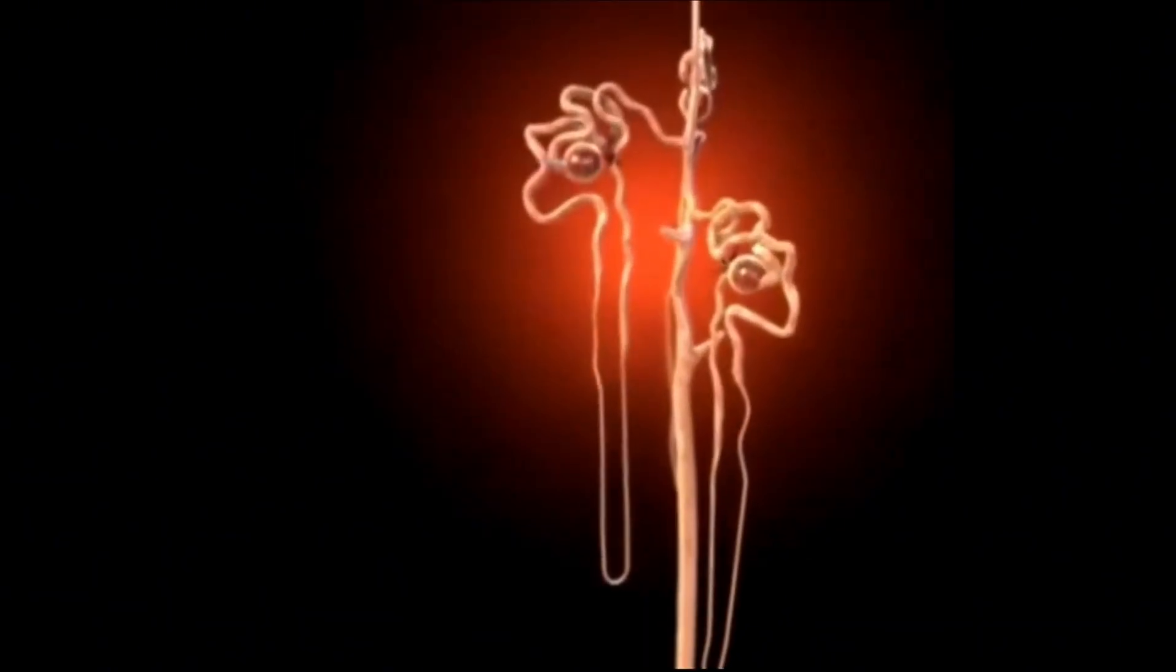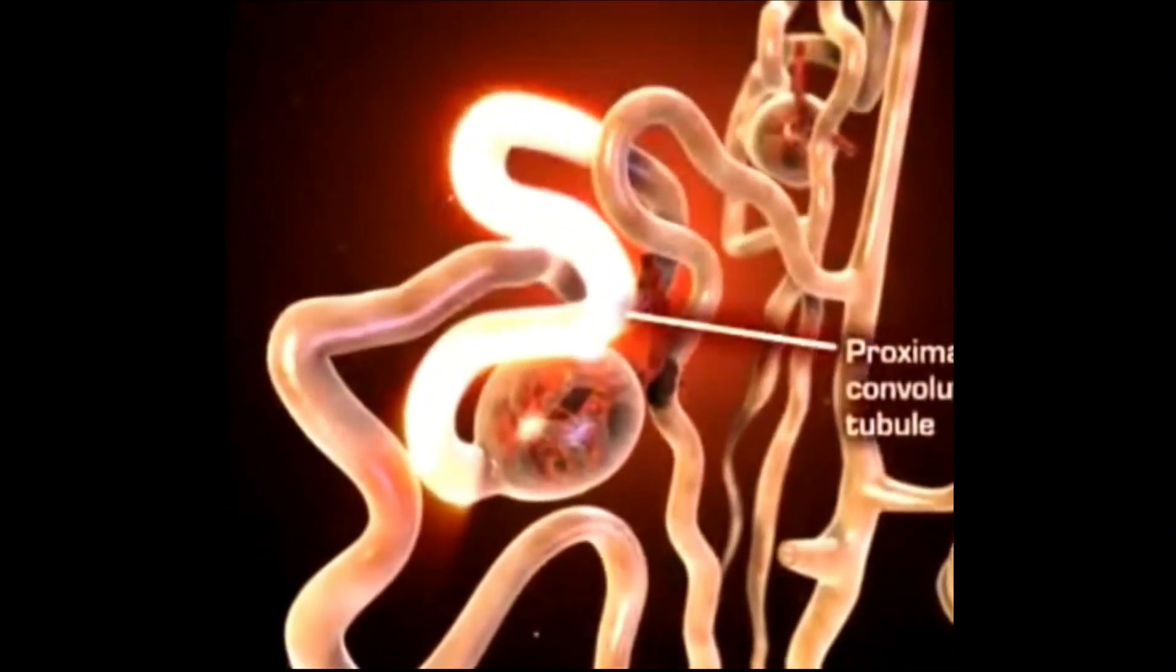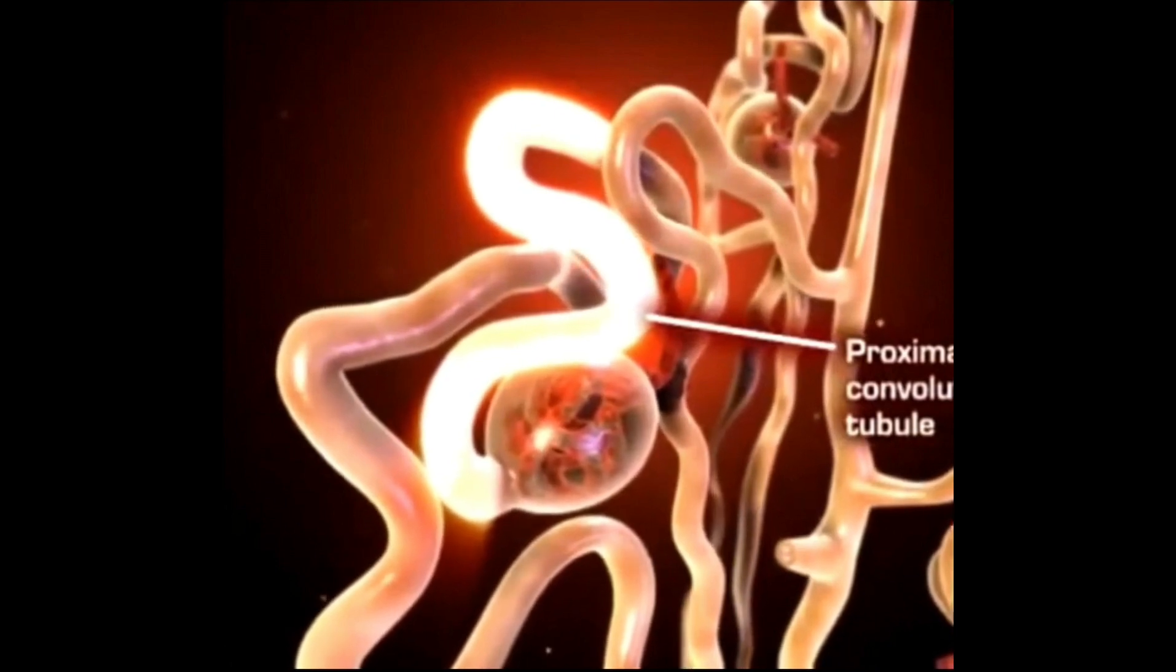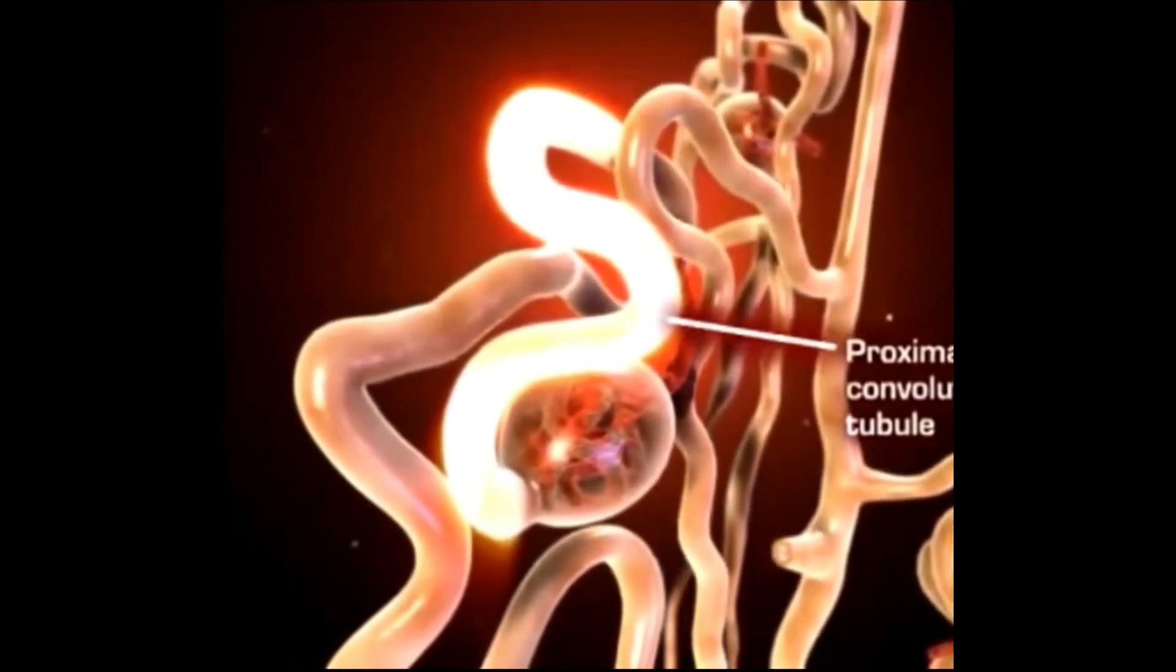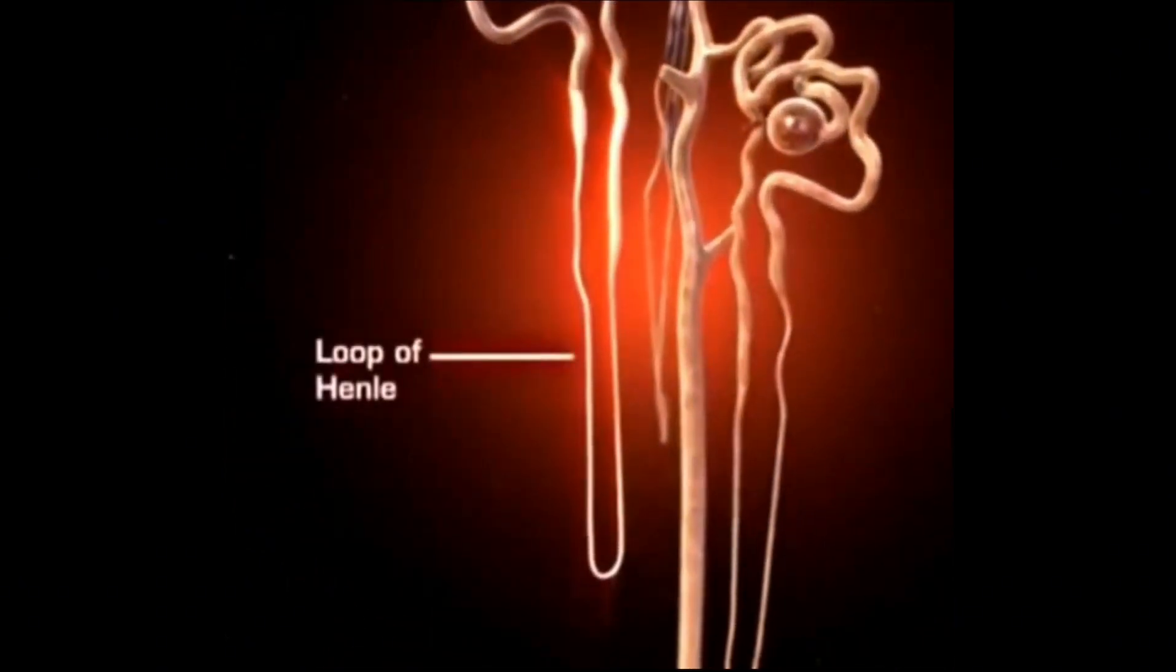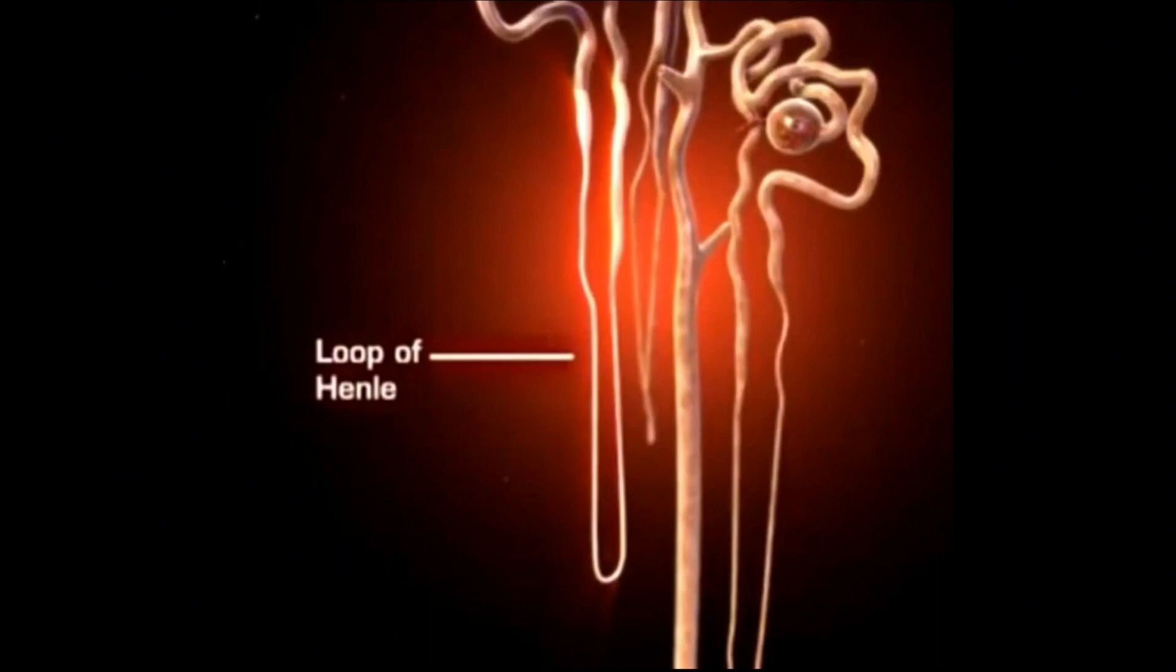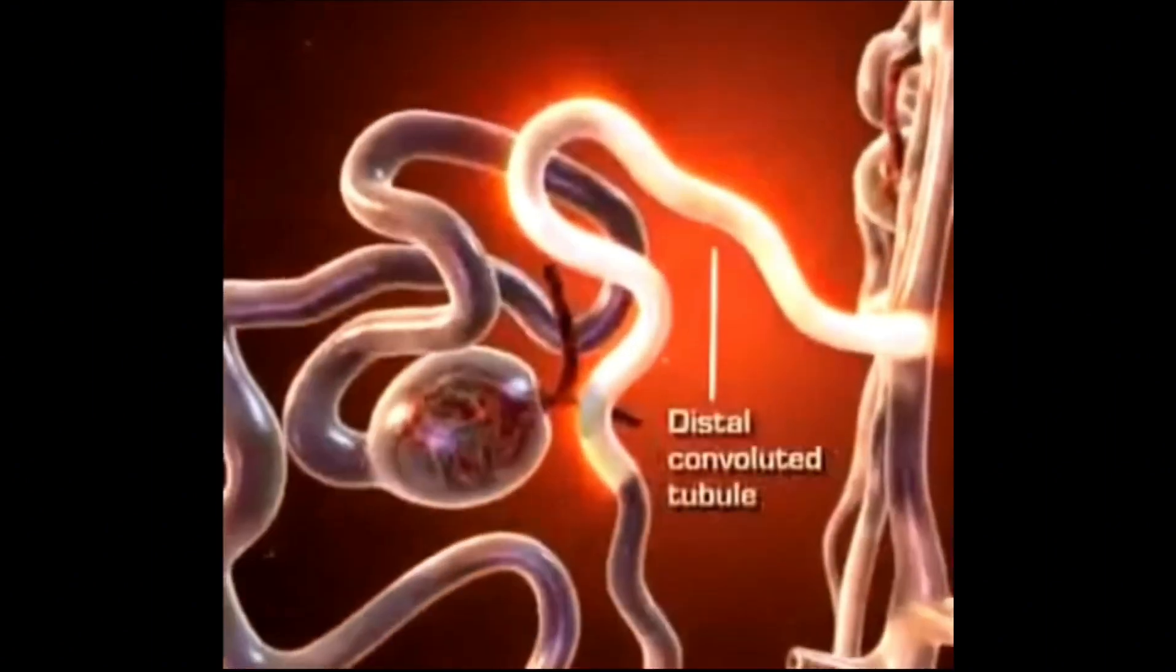Each human kidney contains approximately one million nephrons. These nephrons are responsible for the vital functions of filtering blood, regulating electrolyte balance, and producing urine. It consists of the glomerulus, proximal convoluted tubule, and the loop of Henle, where loop diuretics work. The loop of Henle is a critical component of the nephron, the functional unit of the kidney. It consists of a descending limb and an ascending limb, both extending from the proximal convoluted tubule to the distal convoluted tubule.